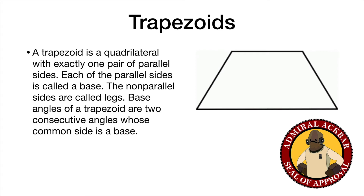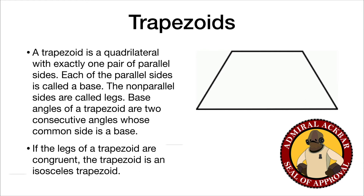A trapezoid, in many ways, is like an isosceles triangle where we've just cut off the top. The base angles of a trapezoid are the two consecutive angles whose common side is a base. If the legs of a trapezoid are congruent, then the trapezoid is called an isosceles trapezoid.